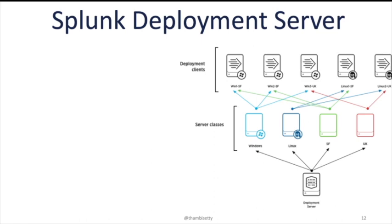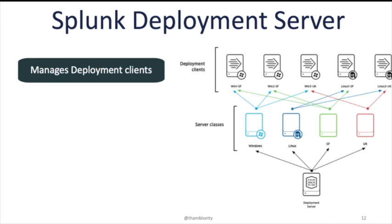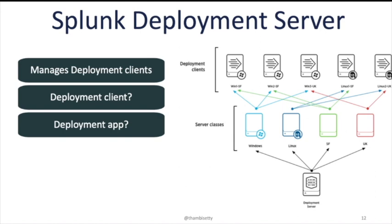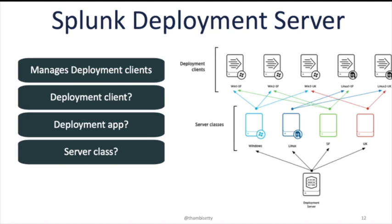Splunk Deployment Server is another role of Splunk Enterprise package. You can see in the picture a single deployment server with server classes and deployment clients. It is a Splunk Enterprise instance that acts as a centralized configuration manager — it deploys configuration updates to other instances. What is a deployment client? A remotely configured Splunk Universal Forwarder or Enterprise instance that receives updates from the deployment server. What is a deployment app? A unit of content deployed to the members of one or more server classes. What is a server class? A server class is a combination of deployment clients and deployment apps. For example, you have a Windows TA containing inputs to collect Windows event logs and want to deploy it to all Windows servers — the new server class combines the TA (the deployment app) and Windows servers (the deployment clients). A deployment client can belong to multiple server classes.